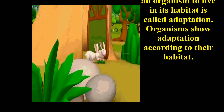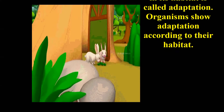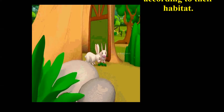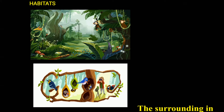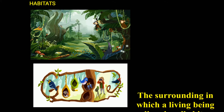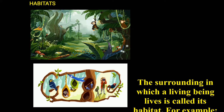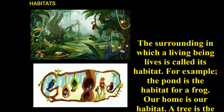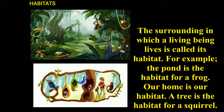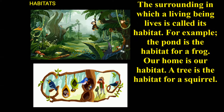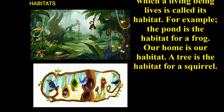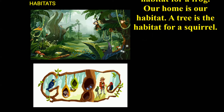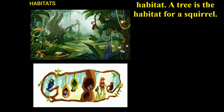Now let us see what is a habitat. The surroundings in which a living being lives is called its habitat. For example, the pond is the habitat for a frog, our home is our habitat, and a tree is the habitat for a squirrel.